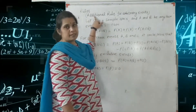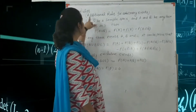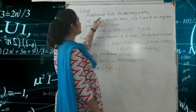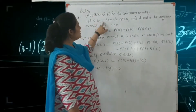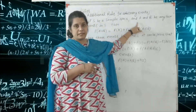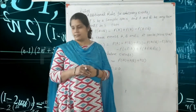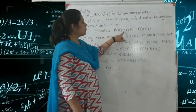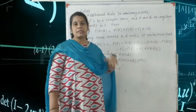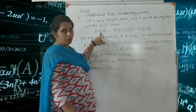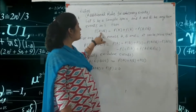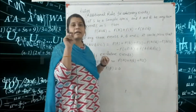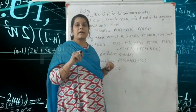Now some rules for finding basic probability. First: the addition rule for arbitrary events. Let S be a sample space and let A and B be any two events in S. Then probability of A union B equals probability of A plus probability of B minus probability of A intersection B. This is a very important formula. Here union means OR, and intersection means AND.